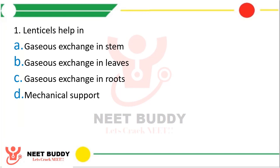Question 1: Lenticels help in — option A gaseous exchange in stem, option B gaseous exchange in leaves, option C gaseous exchange in roots, or option D mechanical support. The correct answer is option A, gaseous exchange in stem. For gaseous exchange in leaves we have stomata, and in stems we have lenticels.